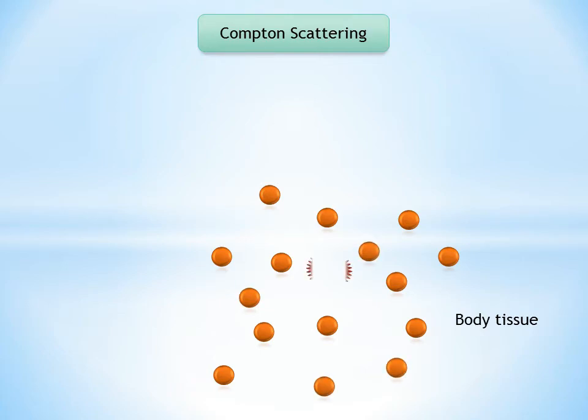The path of the incident photon is deflected by this interaction and is scattered in a new direction from the site of the collision. The energy of the scattered photon equals the energy of the incident photon minus the sum of the kinetic energy gained by the recoil electron and its binding energy. As with photoelectric absorption, Compton scattering results in the loss of an electron and ionization of the absorbing atom.